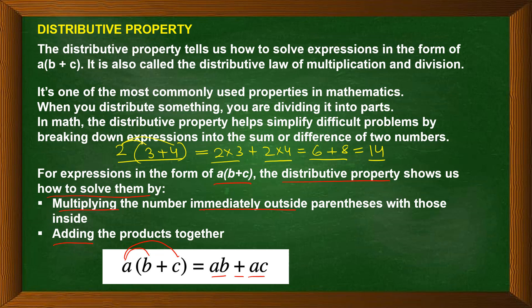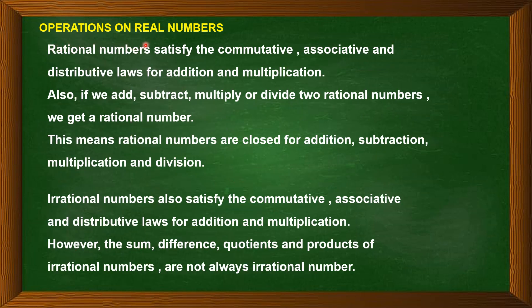Real numbers can be rational or irrational. Rational numbers satisfy all three properties — commutative, associative and distributive laws — for both addition and multiplication. Also, if we add, subtract, multiply or divide any two rational numbers, we always get a rational number. So rational numbers are closed for all four mathematical operations.